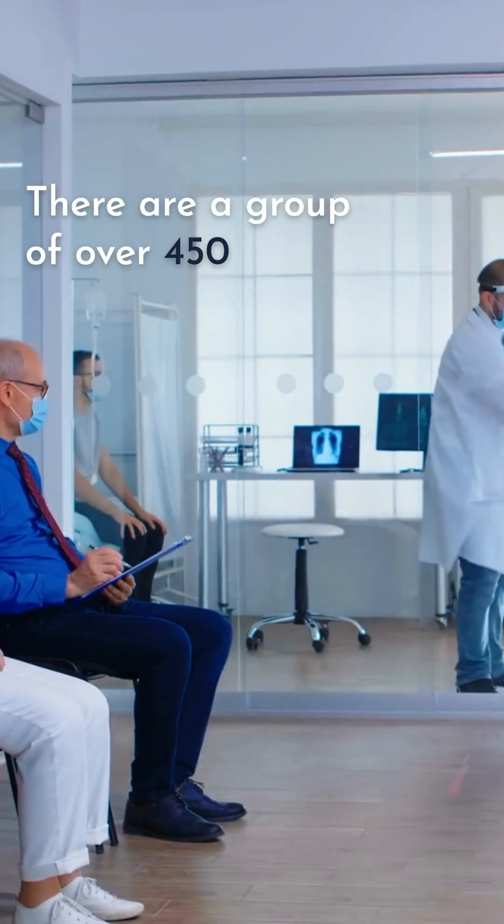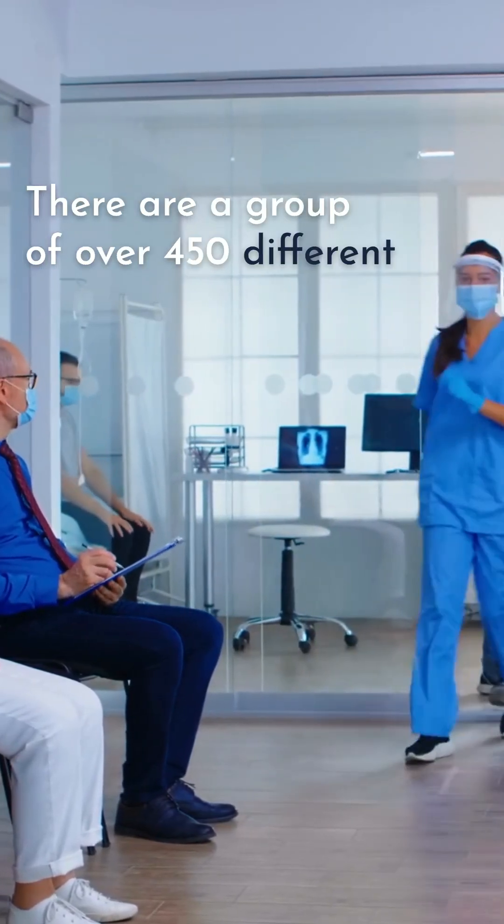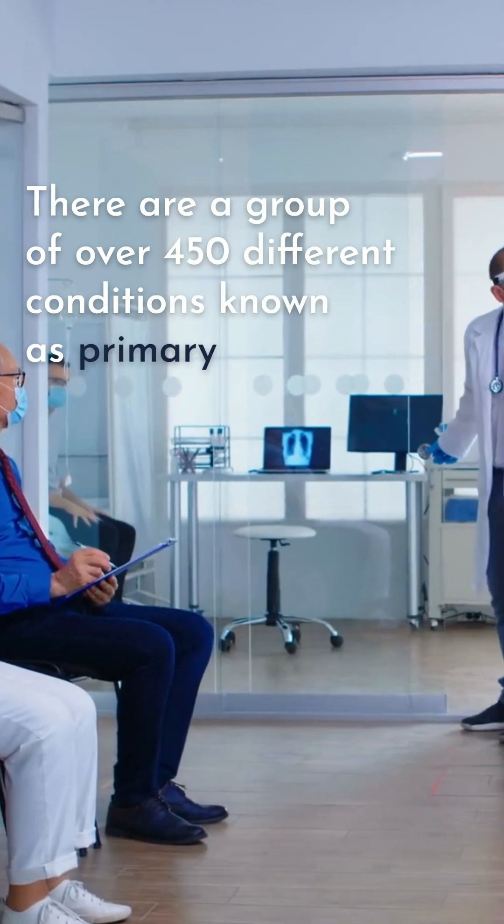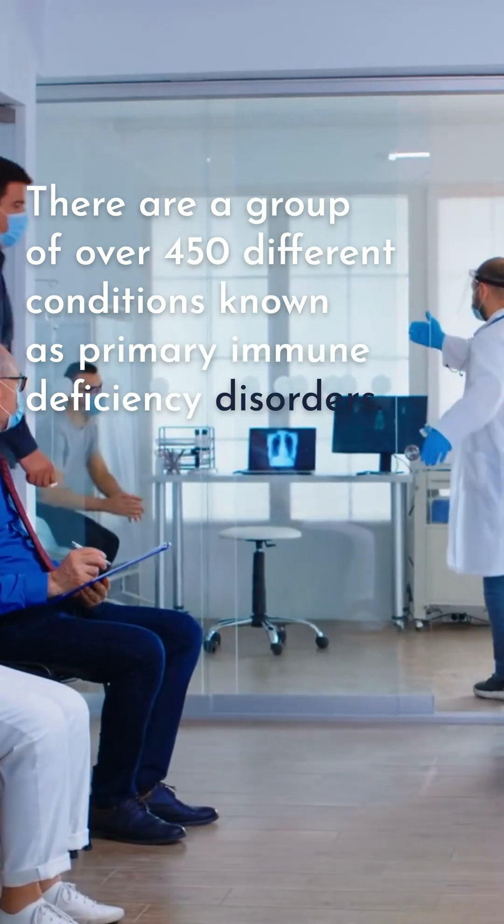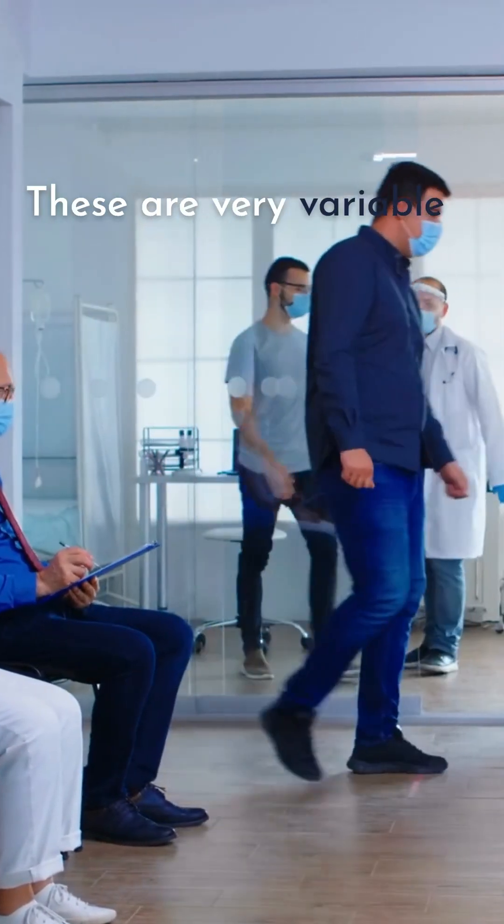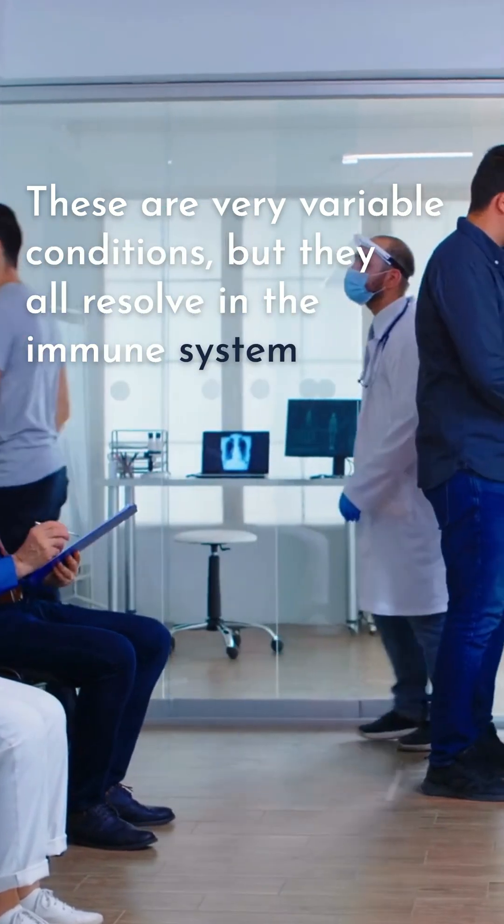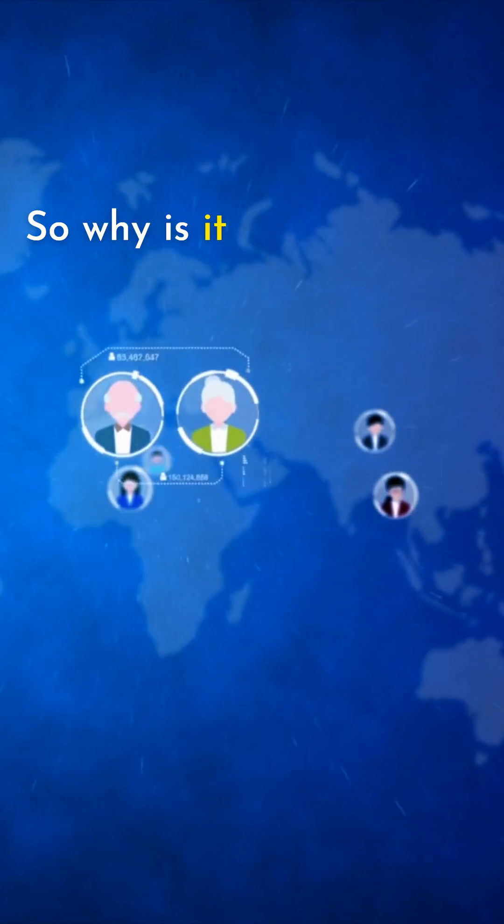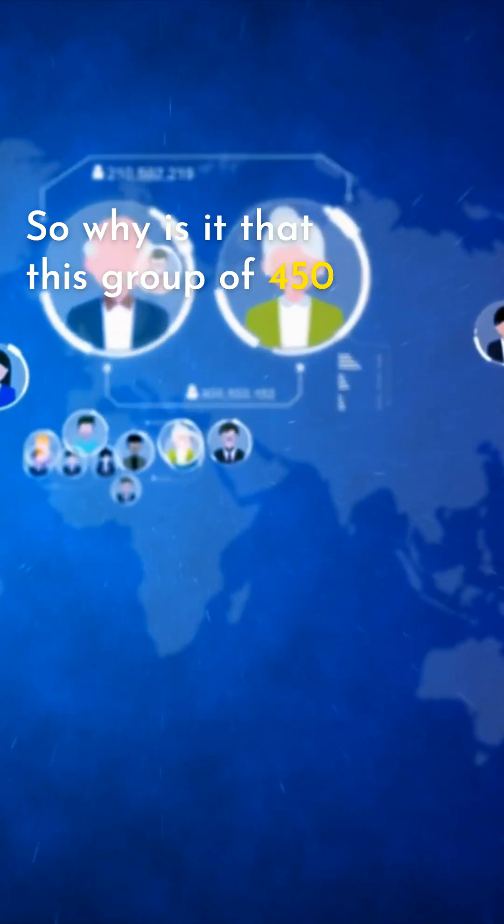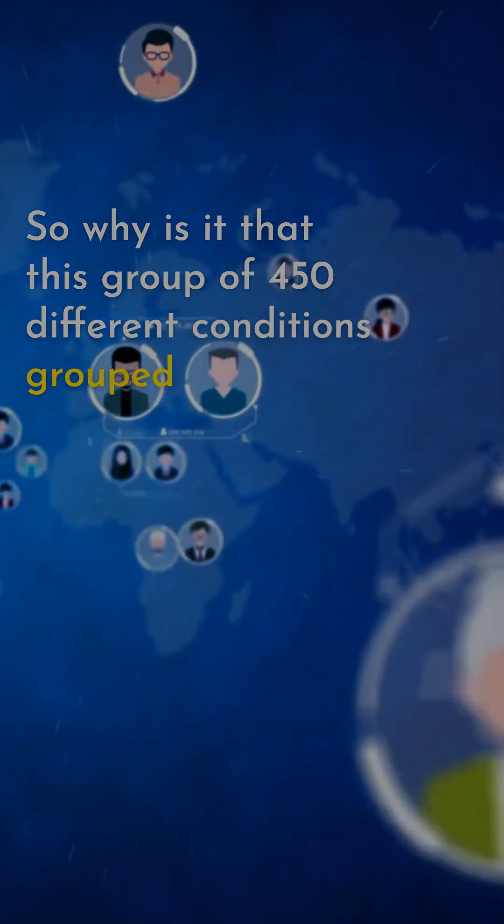There are a group of over 450 different conditions known as primary immune deficiency disorders. These are very variable conditions, but they all result in the immune system not functioning correctly. So why is it that this group of 450 different conditions grouped together?